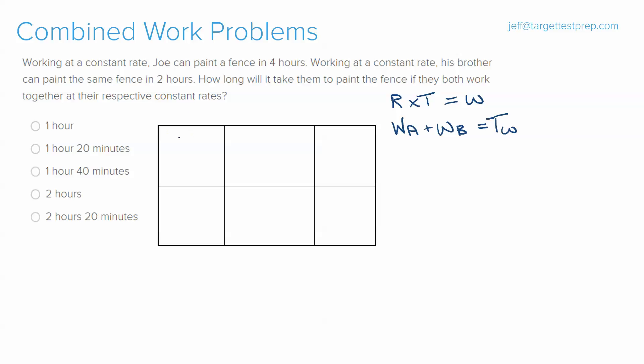Like any rate problem, we're going to fill in our chart: rate, time, work. The problem reads: working at a constant rate, Joe can paint a fence in four hours. Working at a constant rate, his brother can paint the same fence in two hours. How long will it take them to paint the fence if they both work together at their respective rates?